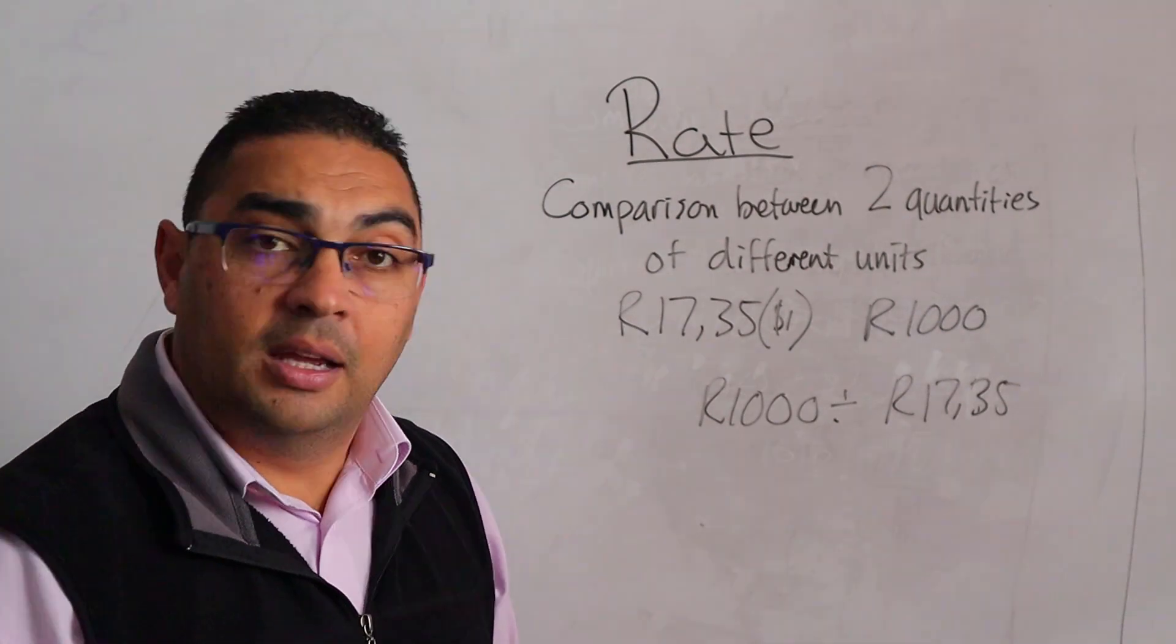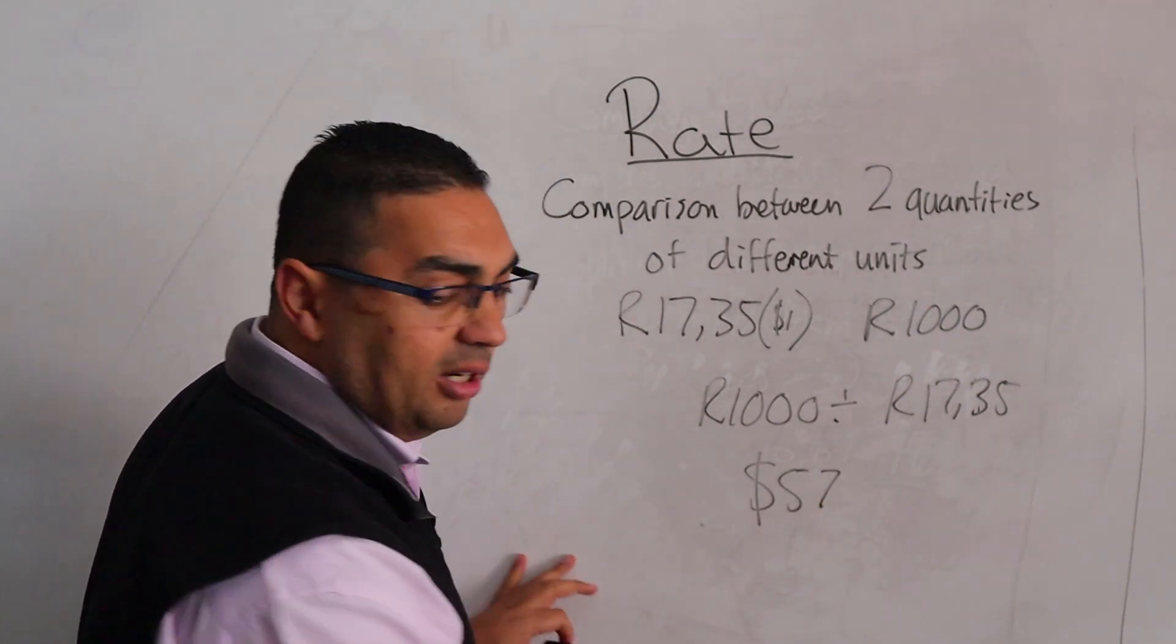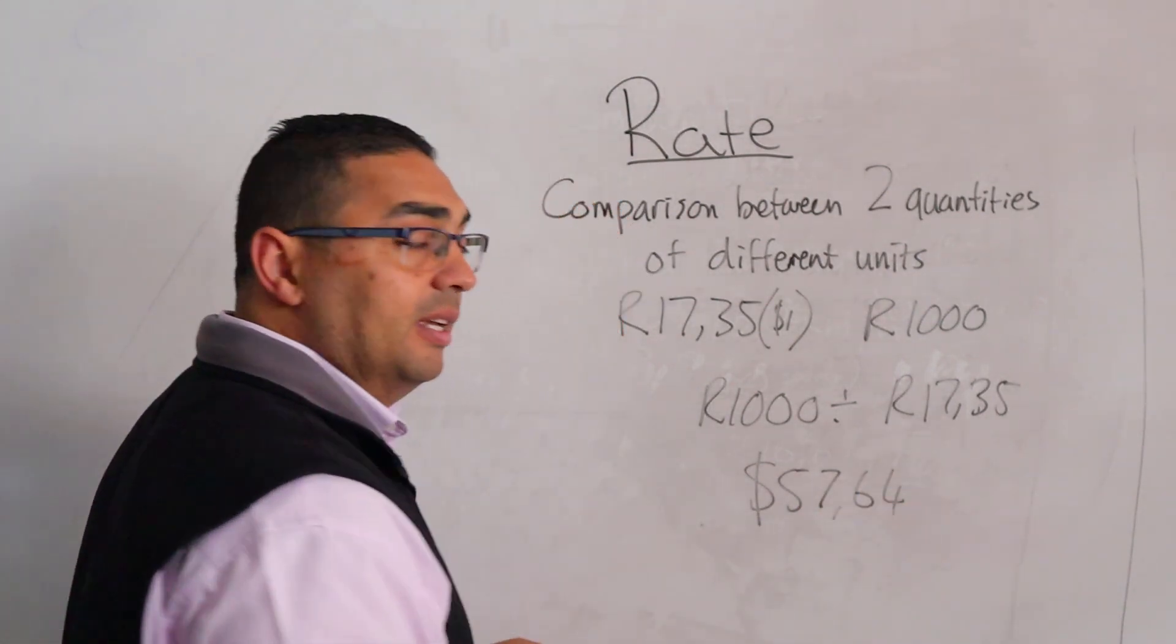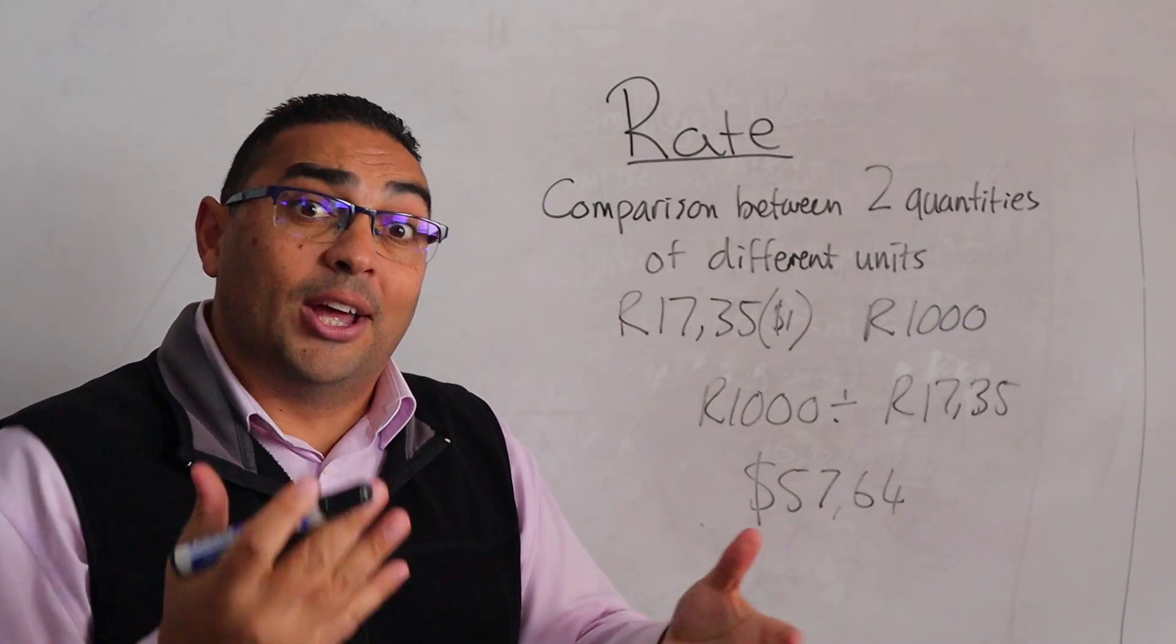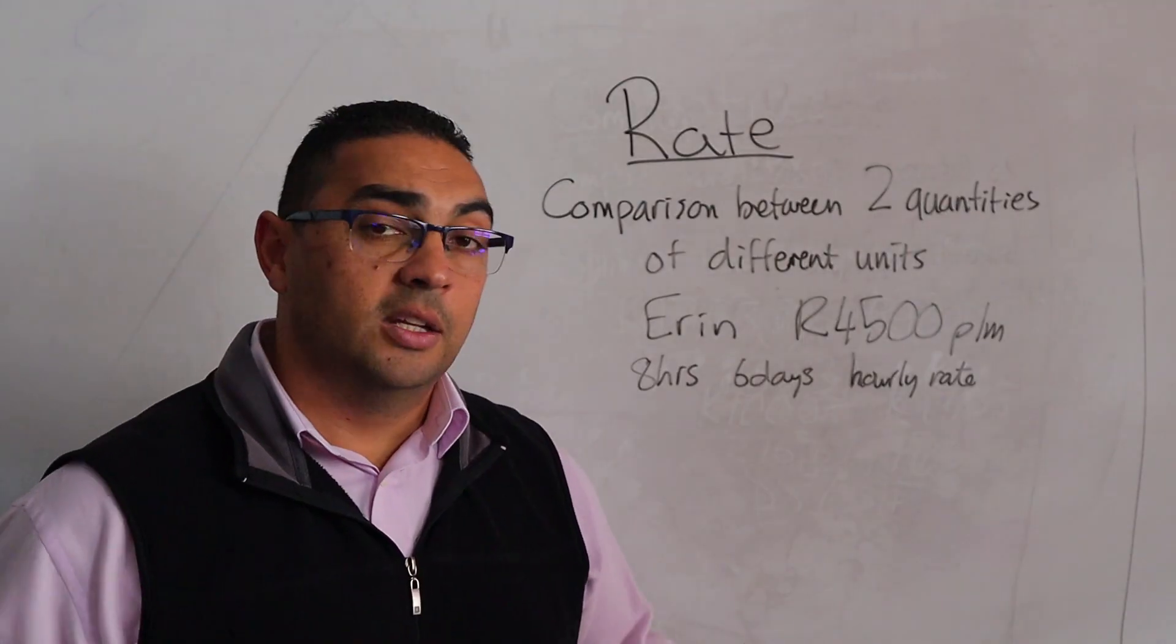What's that going to give me? It's going to give me 57 dollars and 64 cents. Now can you see where my rate came in? With the exchange rate of rands to dollars.